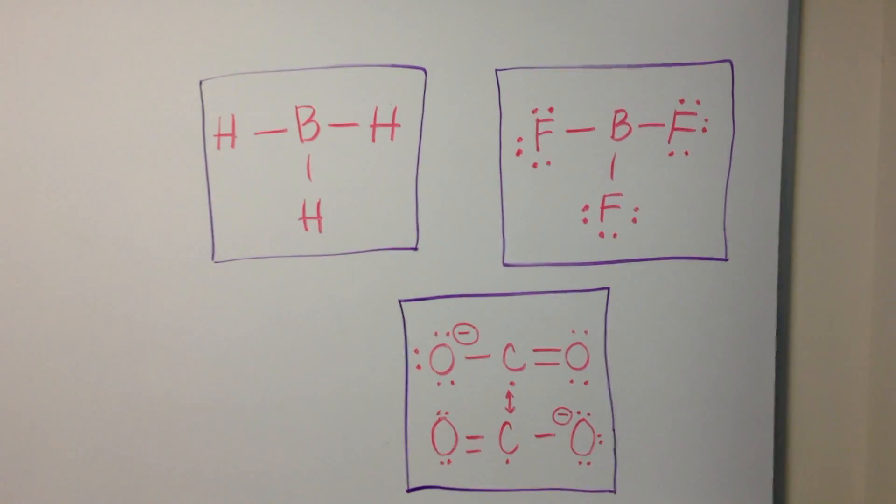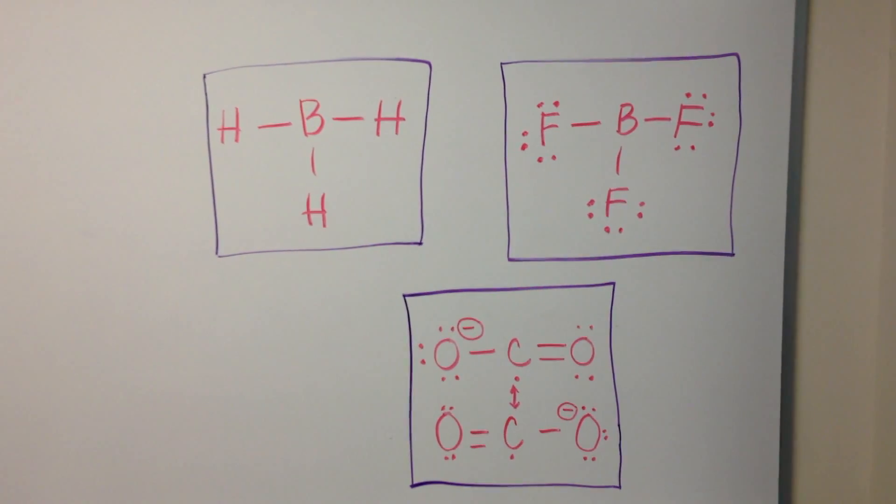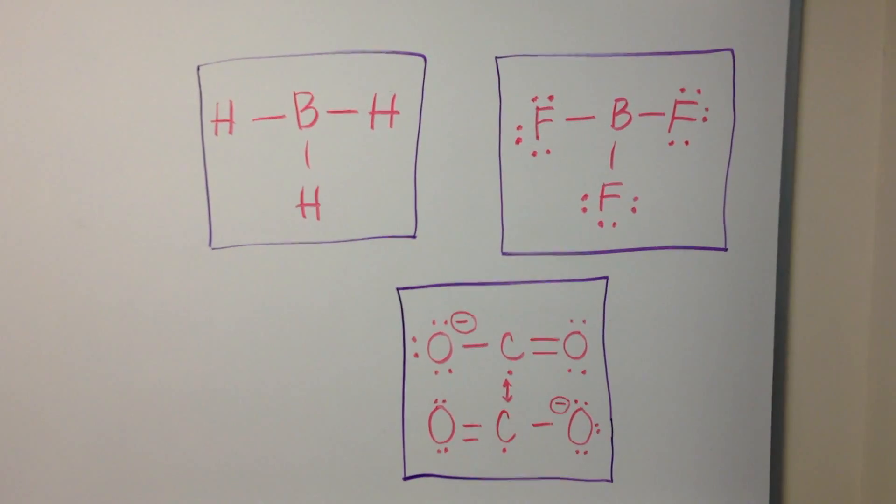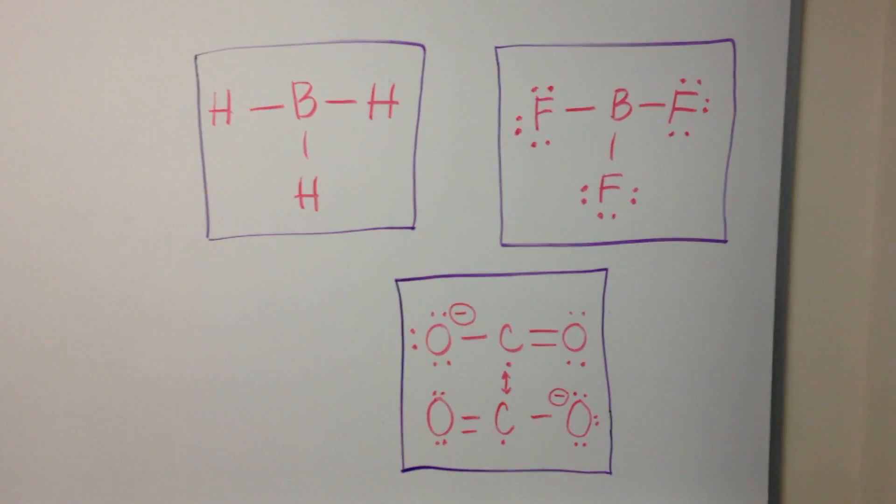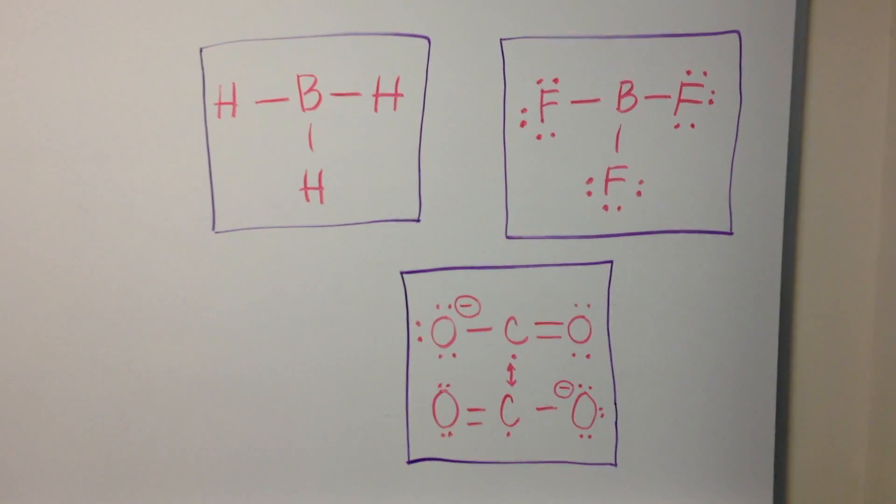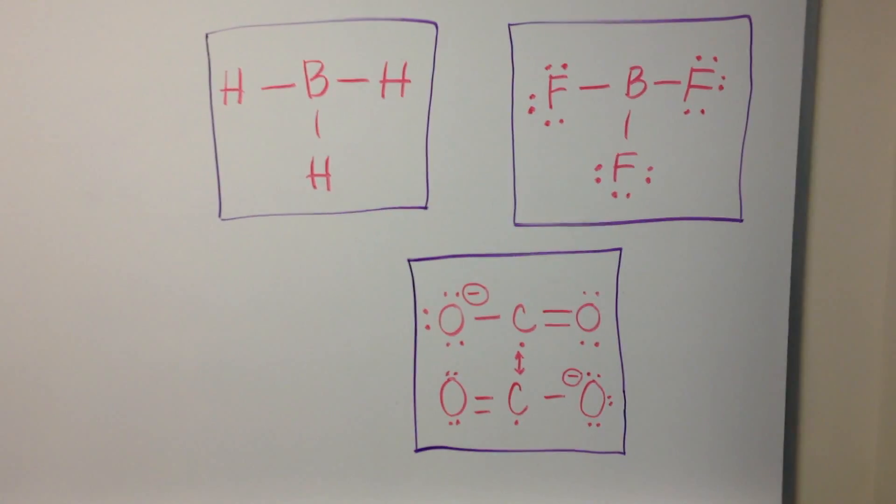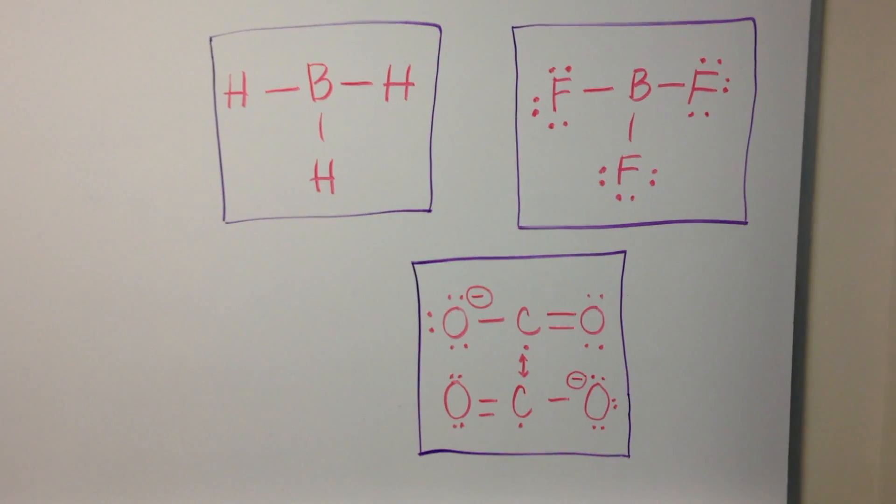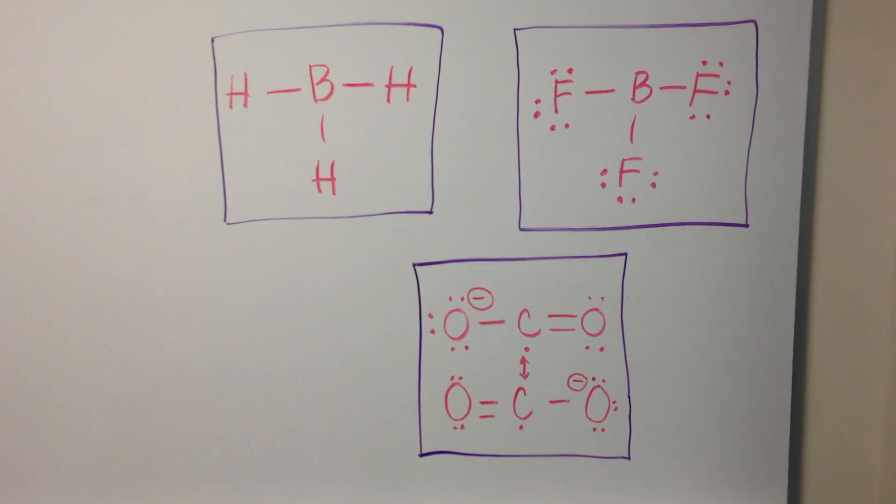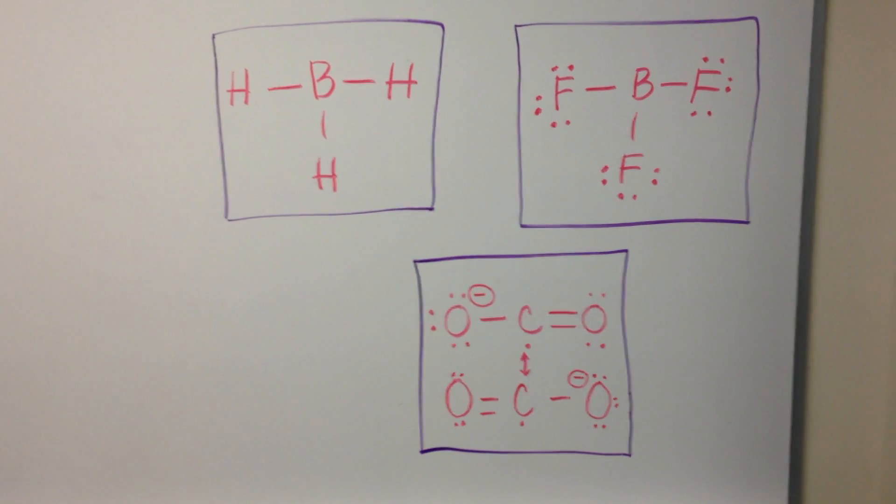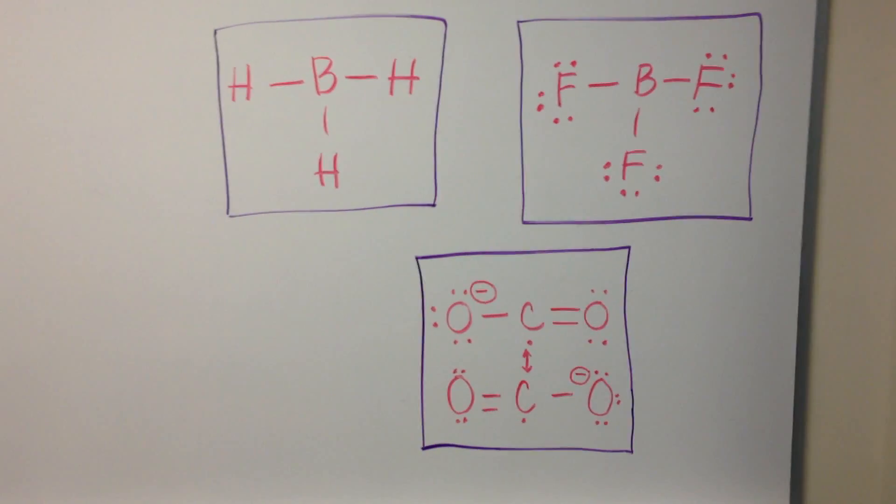In certain situations, like the ones previously discussed, it is energetically favorable to have electron deficient atoms. In other situations, just as in BH3, electron deficiency is the only possibility.